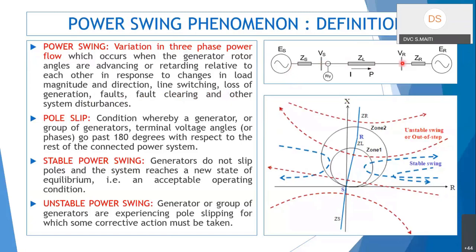If you consider a relaying location with a system behind it and a system in front of it, due to disturbances in the grid the relay may see a cyclic variation in voltage and current caused by reshuffling or rearrangement of rotor angles of the equivalent systems. Physically it is easy to understand with two generators, but you can always think of networks as equivalent generators.